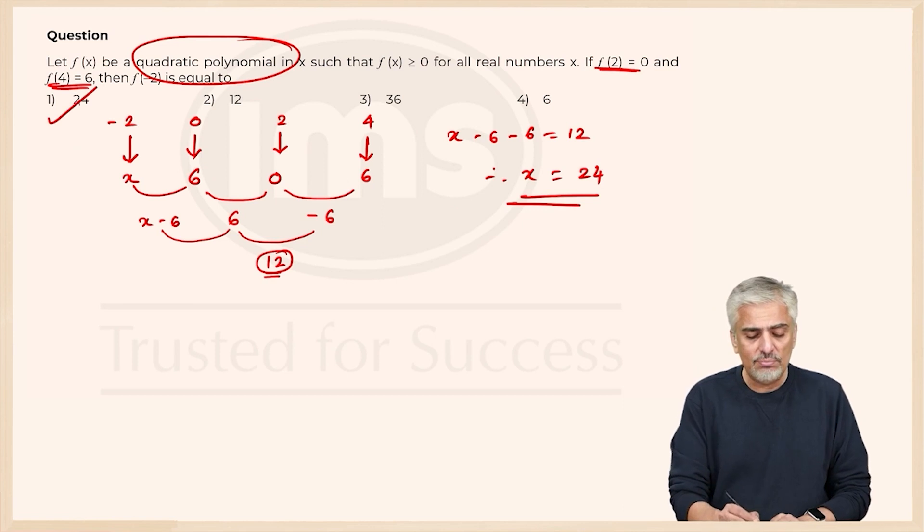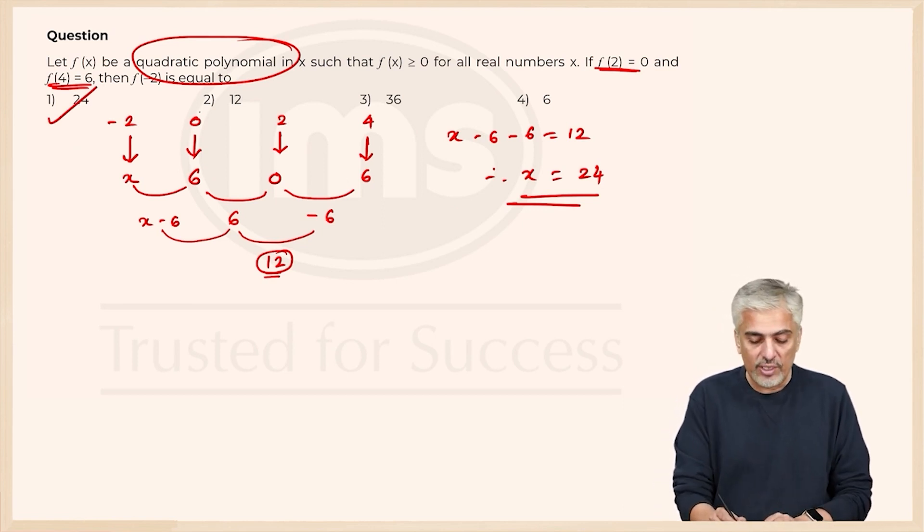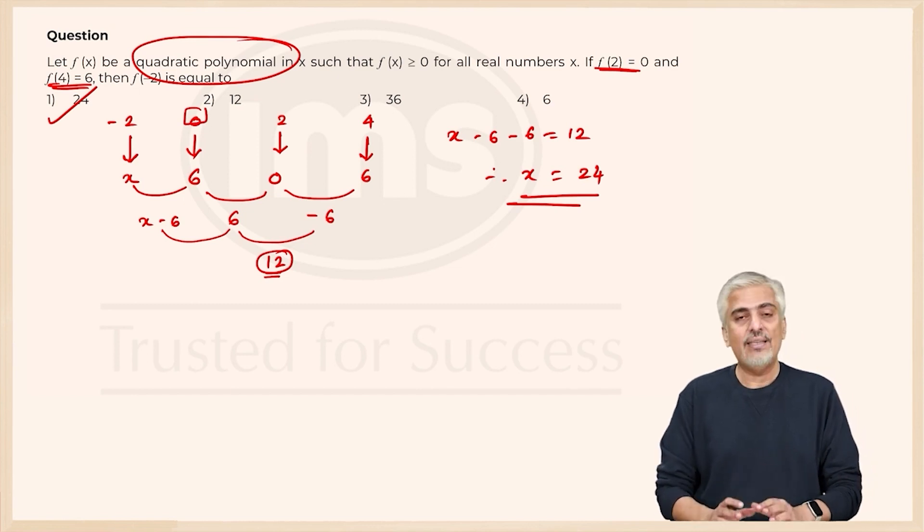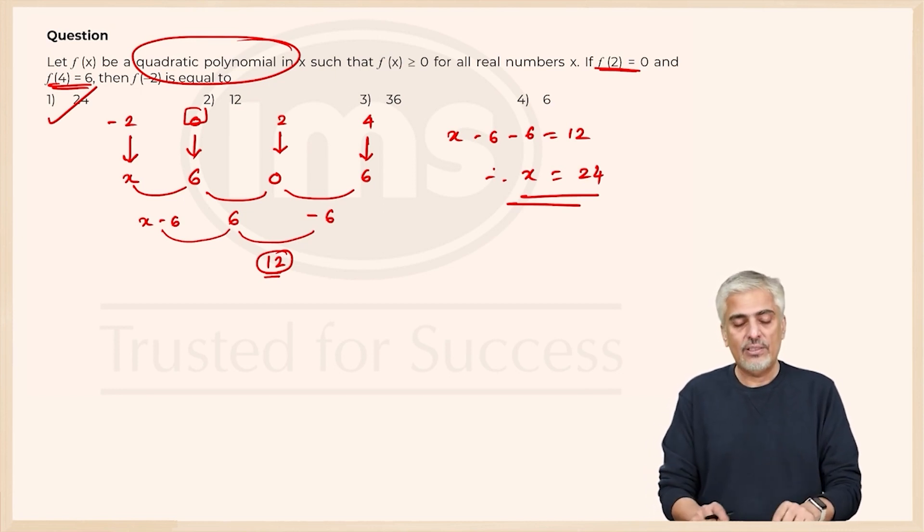This is a much, much, much shorter method to do the question. Obviously you still had to figure out that for 0 the value was 6. But if you understand this approach that the second difference has to be constant in the quadratic equation, then this method will be really, really, really very quick.